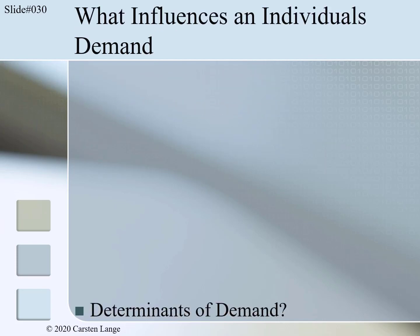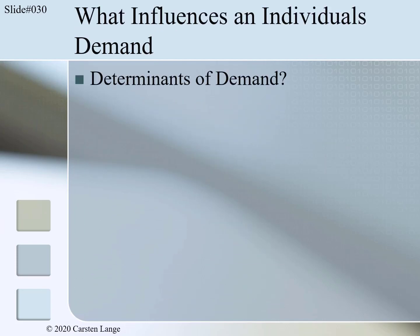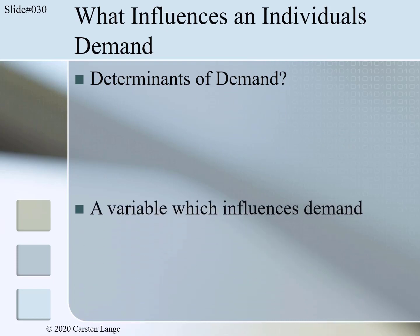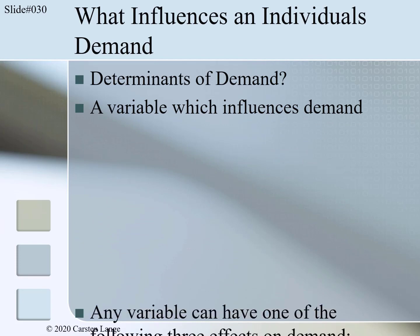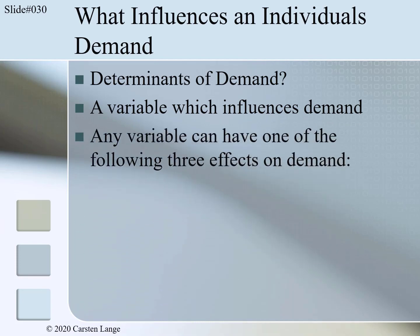What do we mean when we say determinant of demand? A determinant of demand is a variable which influences demand in one direction or the other. Any variable can have one of the following three effects on demand.